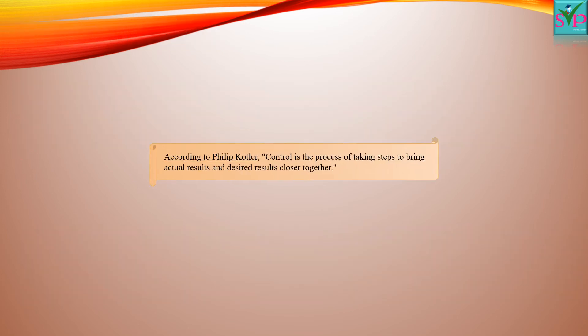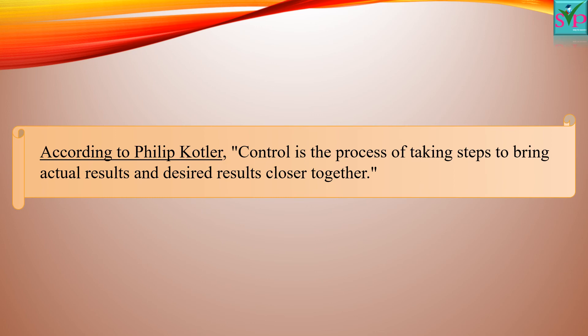According to Philip Kotler, control is the process of taking steps to bring actual results and desired results closer together. Controlling basically compares actual performance with planned outcomes, and in case of any deviations while performing work, the process will start again by removing errors. It calculates the deviations, bridges the gap, and helps meet the organizational goal — bringing actual result and desired result closer together.